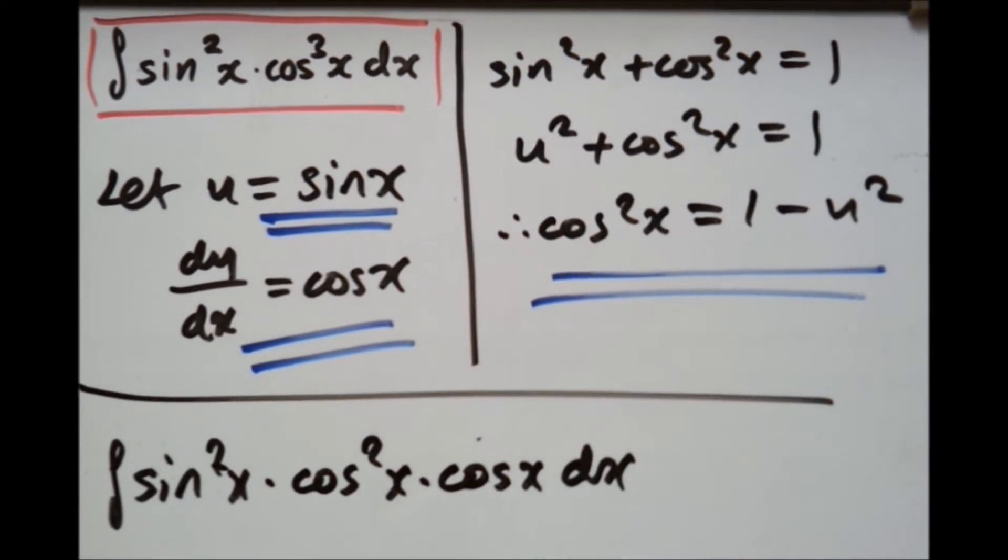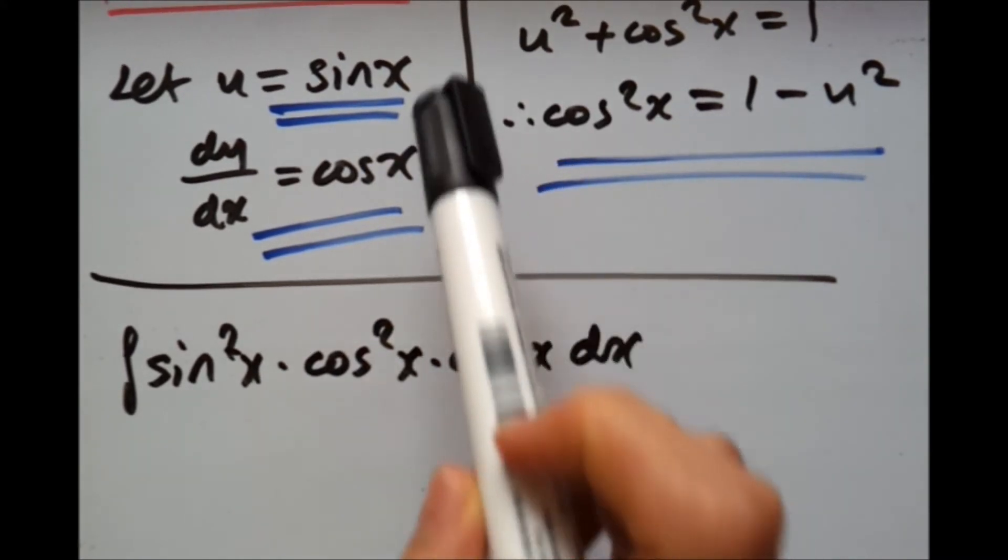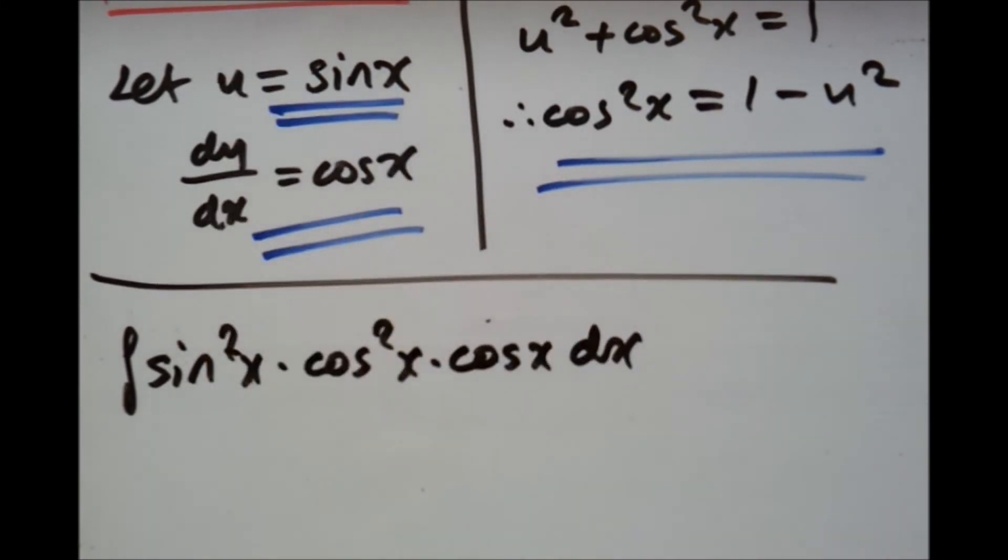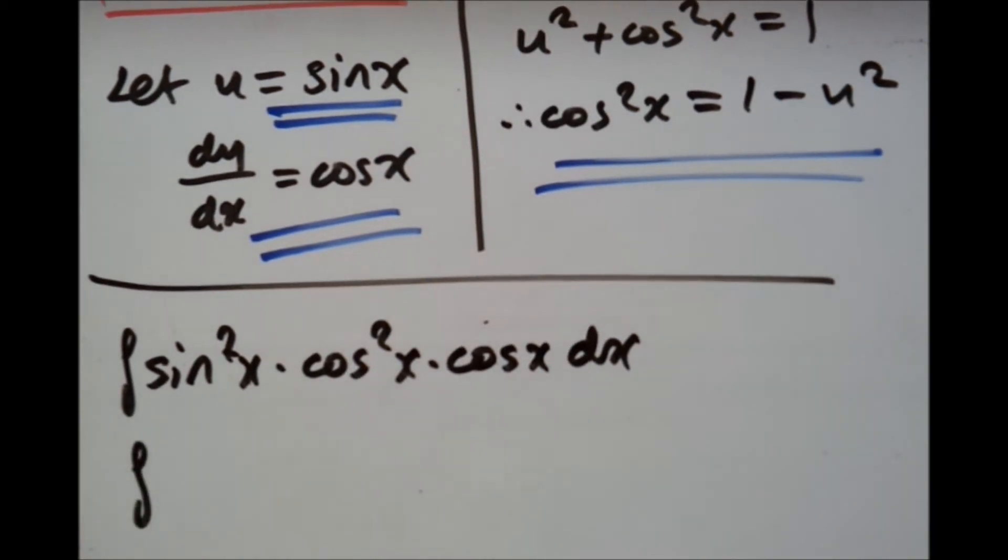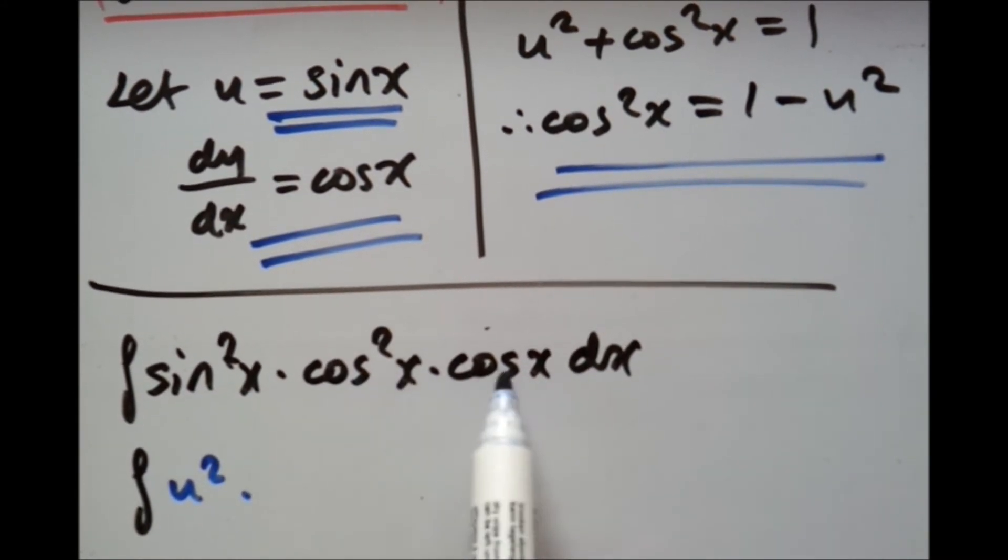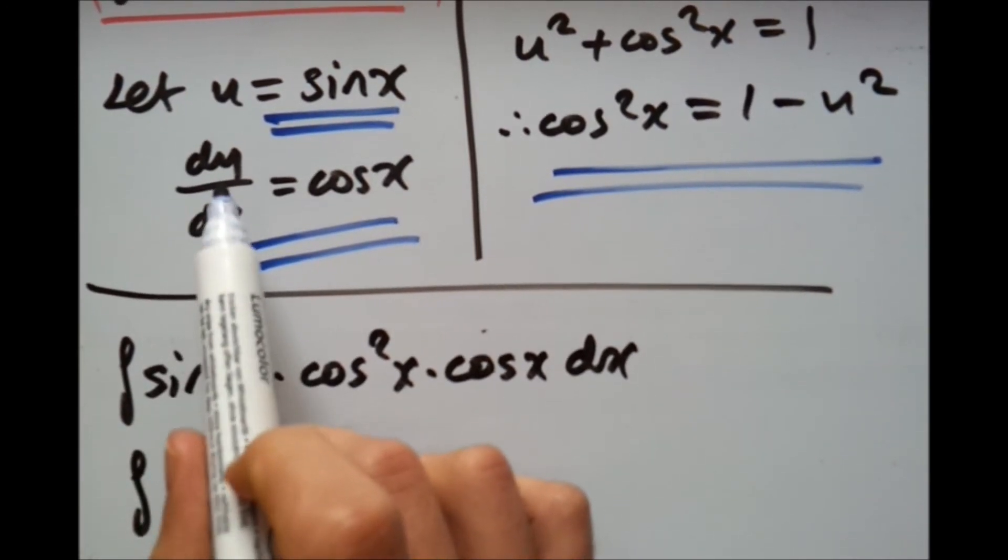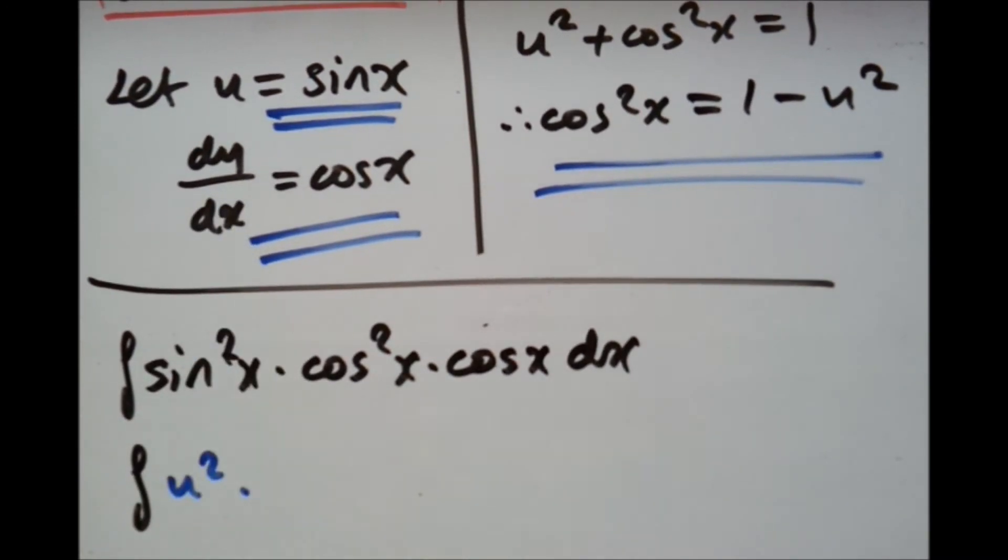Now this should be easy. If you can see, we can now just substitute sin x into here, where U would be being replaced. So let me just change the colours a bit. So if I put U into here, we could have U squared. Now for cos squared x, be careful not to choose this one because we do not want a du squared over dx squared. It just don't make sense basically.